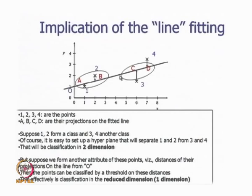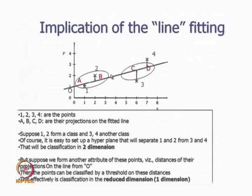We have reduced the dimension of the problem — the projections of A, B, C, and D are treated as unidimensional distances from a special point O, obtained from two-dimensional representations. We have come down from a two-dimensional problem to a single-dimensional problem, and this line enables that. This is the whole point about dimensionality reduction: taking the problem into a different space with different parameters.